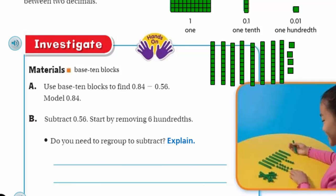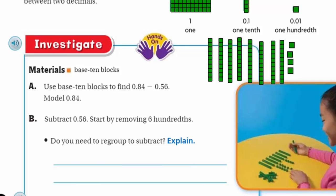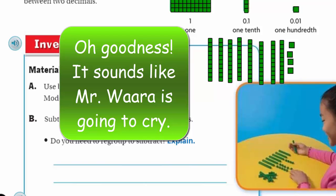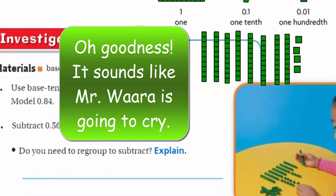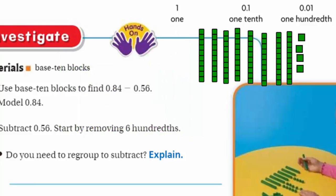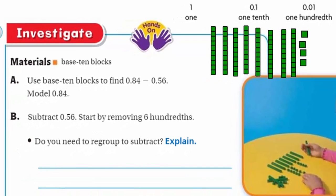I was going to start removing the 6 hundredths and I realized that I couldn't do it. There's only four. What do you do? It has a question. Do you need to regroup to subtract? Yes. I don't have enough. I need to regroup my 1 tenth here as 10 hundredths to subtract.